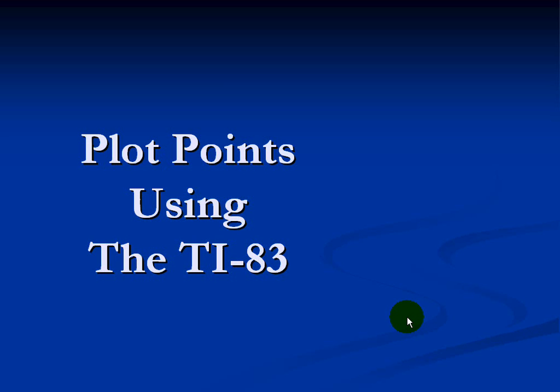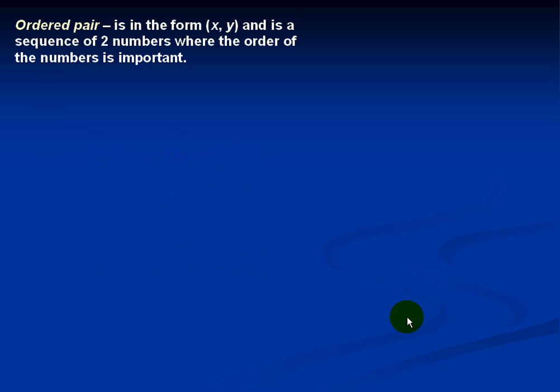Plot points using the TI-83 series of calculators. An ordered pair is in the form X, Y and is a sequence of two numbers where the order of the numbers is important.